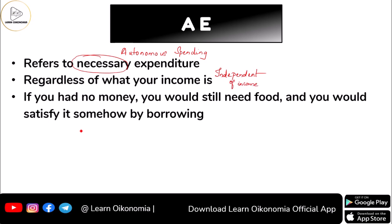If your income is zero, autonomous spending — or autonomous expenditure — will still happen. How can this happen? You might either go for borrowing by asking your friends, relatives, or neighbors, or you might borrow from a bank, or else you will be using your past savings.